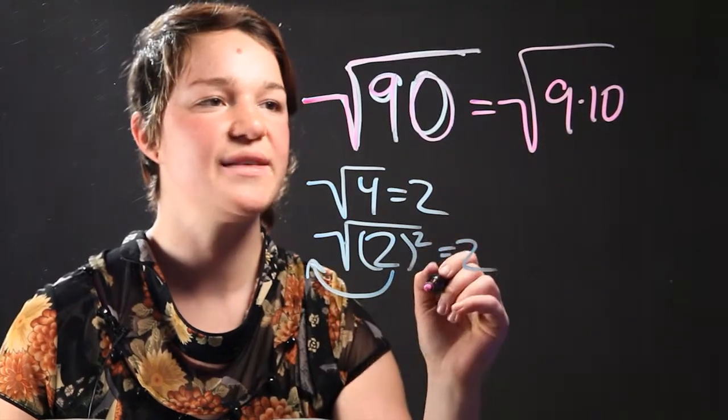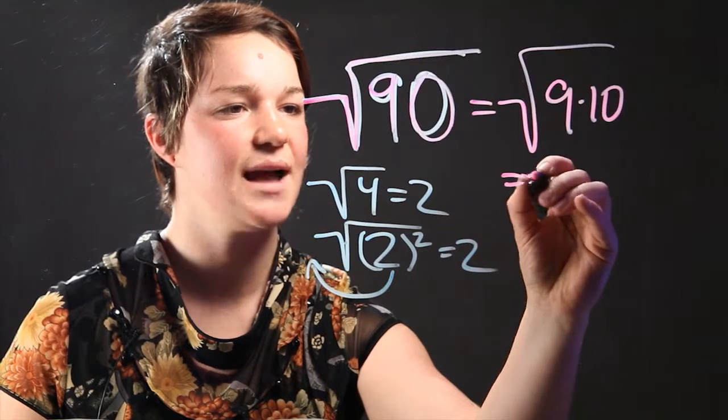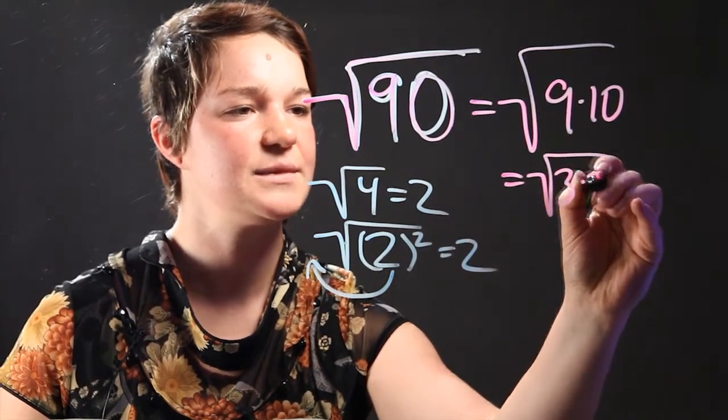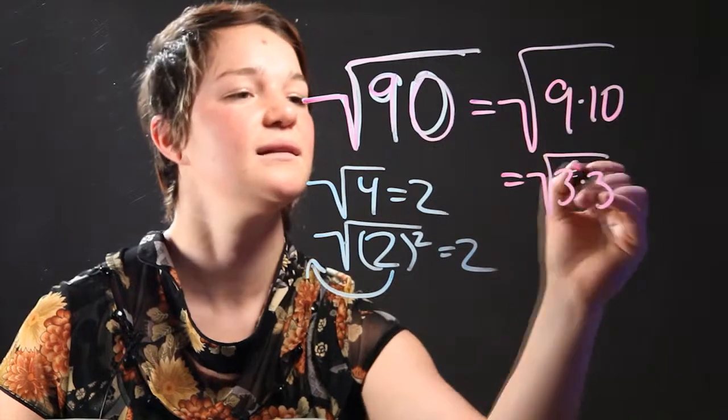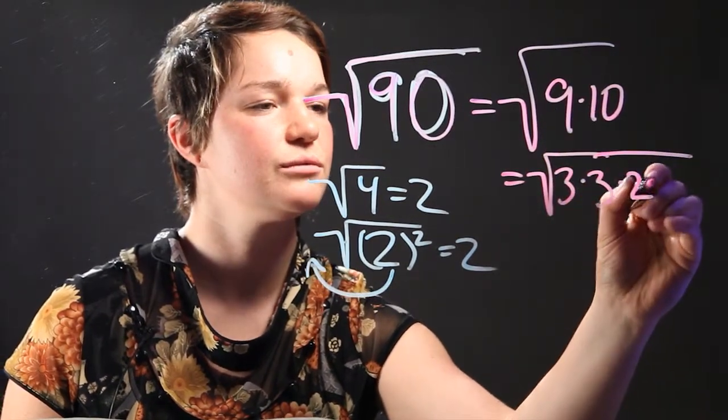But we can simplify this even further. So 9 times 10 is actually equal to 3 times 3, which is 9. And furthermore, 10 is 2 times 5.